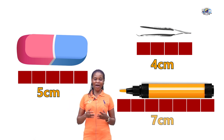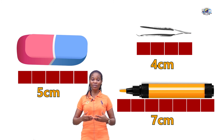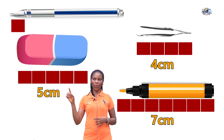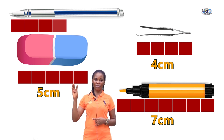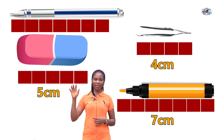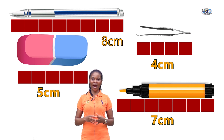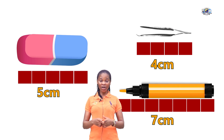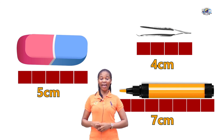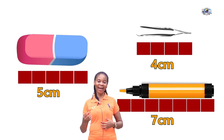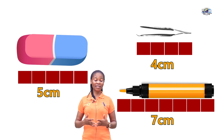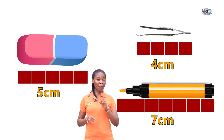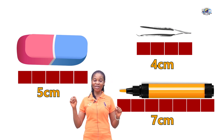Now we have our pen. Let's measure our pen together: 1, 2, 3, 4, 5, 6, 7, 8 — so our pen is 8 centimetre cubes long. Our eraser is longer than our head clip and shorter than our marker, because our eraser is 5 centimetre cubes long, our head clip is 4 centimetre cubes long, and our marker is 7 centimetre cubes long.